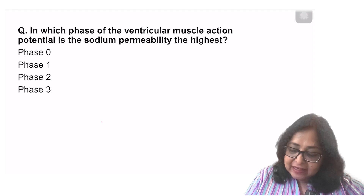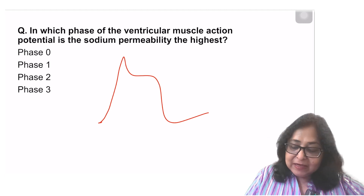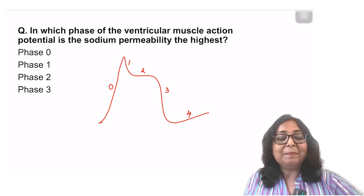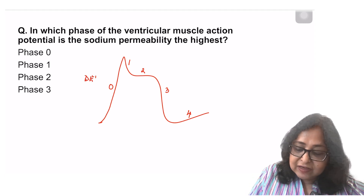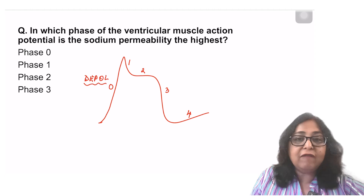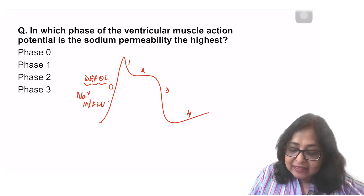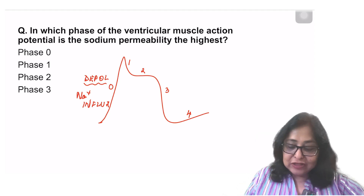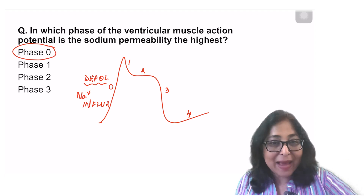If you look at the ventricular muscle action potential, this is known as the pacemaker potential. The pacemaker potential has got five phases: phase 0, phase 1, phase 2, phase 3, and phase 4. Phase 0 is the depolarization phase, due to opening of voltage-gated sodium channels and a sodium influx. This is the phase where the sodium influx is the highest, so phase 0 is the phase in which sodium permeability is maximum.